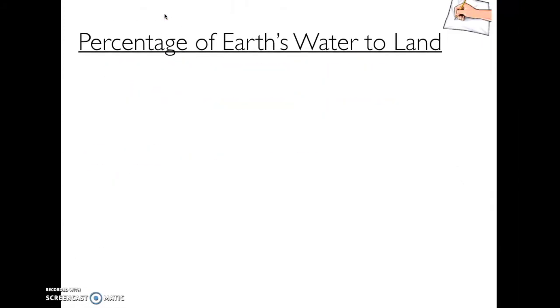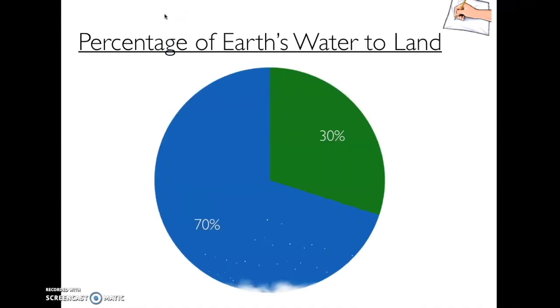The percentage of Earth's water to land: 70% of Earth is made up of water, so the blue represents water, and 30% of Earth is land.